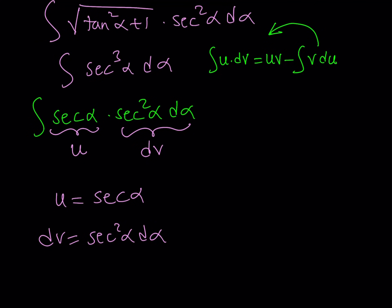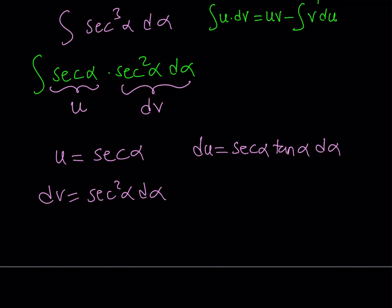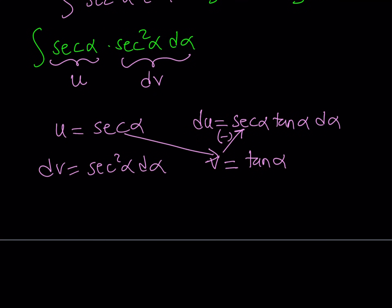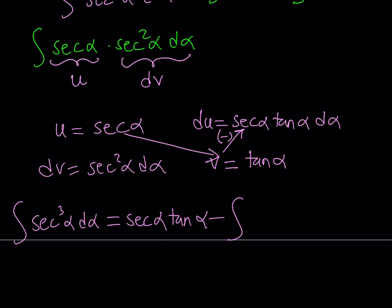So u equals secant alpha and dv equals secant squared alpha d alpha. Differentiating, du equals secant alpha tangent alpha d alpha. Integrating dv, v equals tangent alpha. Applying the integration by parts formula, the integral of secant cubed alpha d alpha equals secant alpha tangent alpha minus the integral of tangent alpha times secant alpha tangent alpha d alpha, which gives us secant alpha times tangent squared alpha.